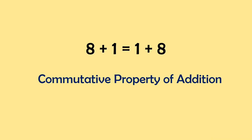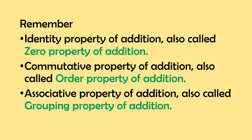Remember, the identity property of addition is also called the zero property of addition. Commutative property of addition is also called the order property of addition. And associative property of addition is also called the grouping property of addition.